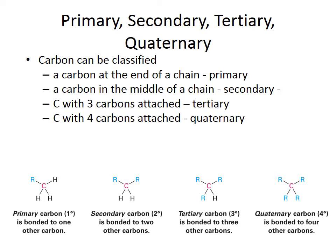Now we're going to identify primary, secondary, tertiary, and quaternary carbons. This is basically classifying a carbon by how many carbons are attached to it. A carbon at the end of a chain has only one carbon attached — we call it a primary carbon. A carbon in the middle of a chain has two carbons attached — secondary. A carbon with three carbons attached is tertiary. A carbon with four carbons attached is quaternary. We'll use these terms again later, so learn them well.